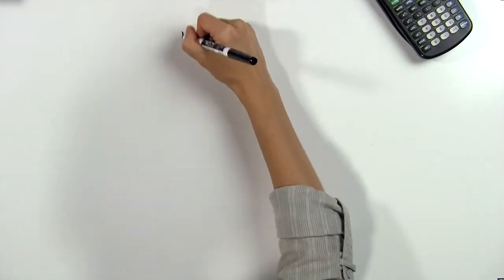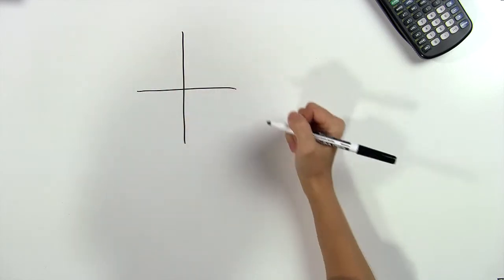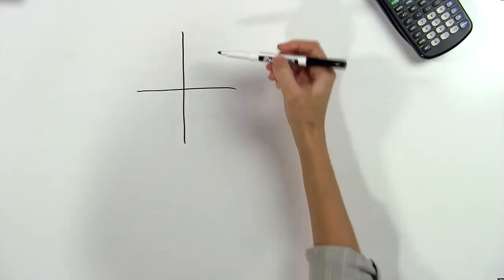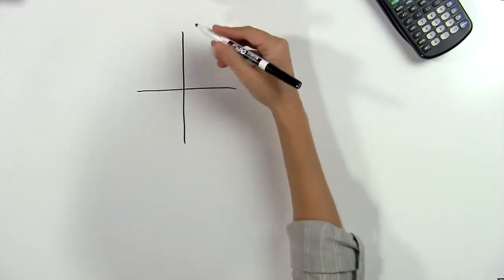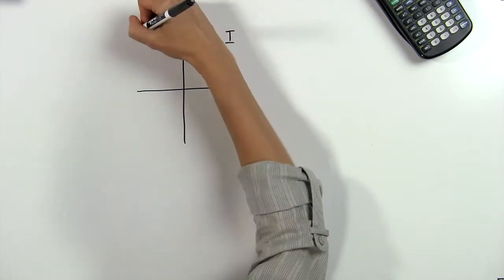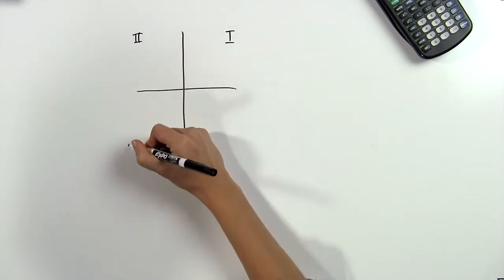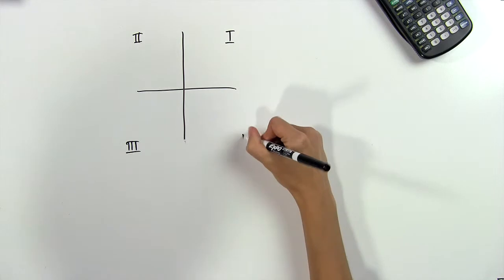You'll probably remember that we have four quadrants in two-dimensional space and we number them counter-clockwise starting with the top right one. So we have one, two, three, and four.